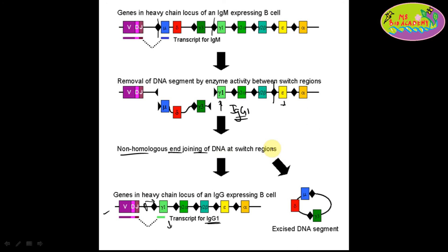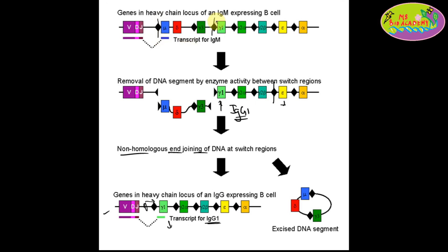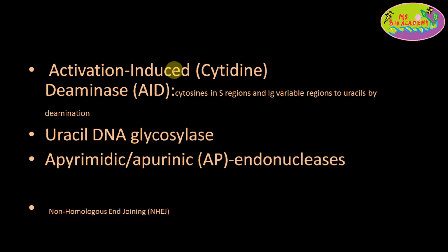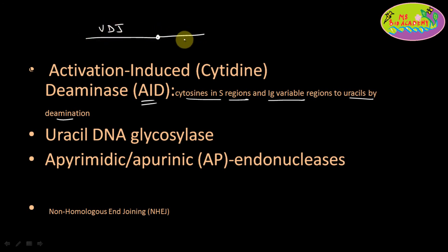This is how class switching happens. Many enzymes are involved in creating these double-stranded breaks during class switching. One key enzyme is Activation-Induced Cytidine Deaminase, or AID. What it does is convert all the cytosines present in the S region and in the immunoglobulin variable regions into uracils by deamination.